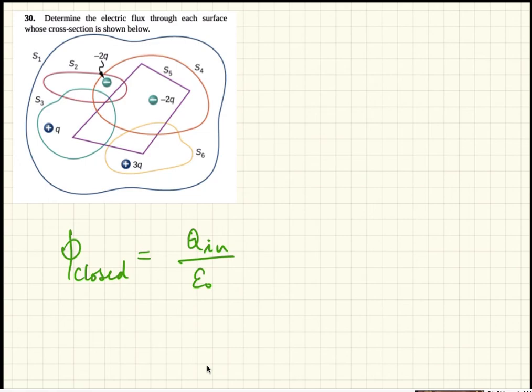I'll do a couple. So let's do the flux through S3. For the surface S3, the only charge inside is Q. So the flux through S3 is Q inside divided by epsilon naught, which is Q divided by epsilon naught.